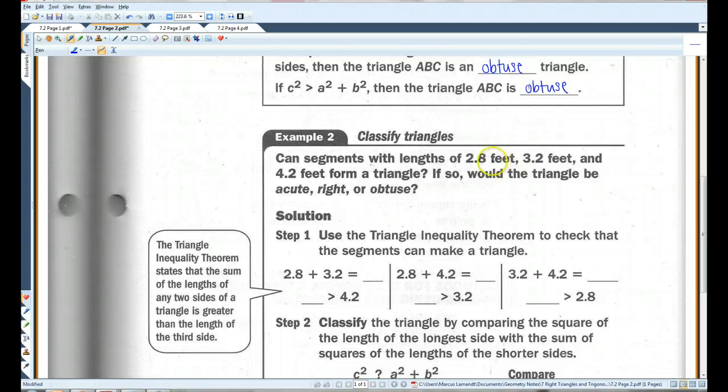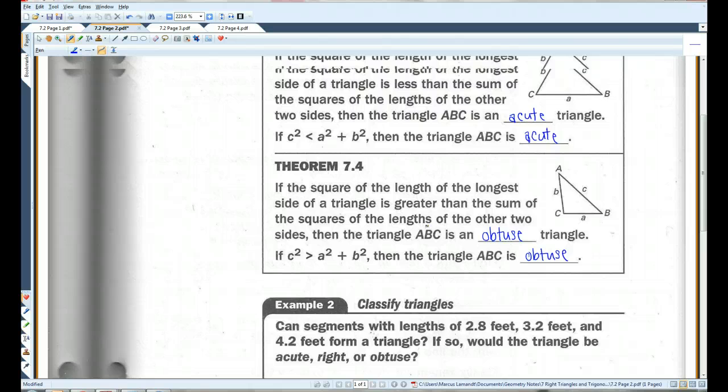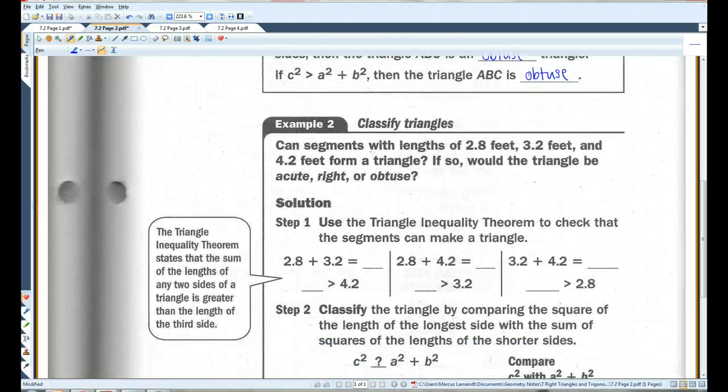Can segments with lengths of 2.8 feet, 3.2 feet, and 4.2 feet form a triangle? If so, would the triangle be acute, right, or obtuse? Okay, so, we're going to use the triangle inequality theorem to check that the segments can make a triangle.